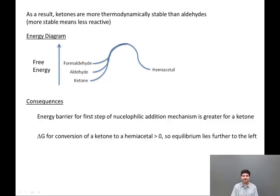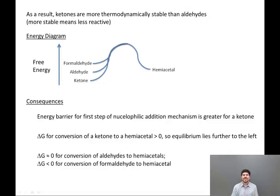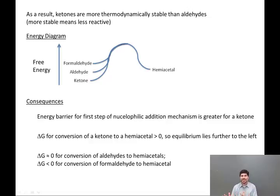Secondly, delta G for conversion of a ketone to a hemiacetal is positive — the hemiacetal is higher in energy than the ketone, so the equilibrium for this overall reaction lies further to the left. Delta G is approximately zero for the conversion of aldehydes to hemiacetals, and delta G is negative — meaning favorable — for the conversion of formaldehyde to a hemiacetal. This behavior, both the steric and electronic effects, is consistent with what we observe physically in the laboratory.